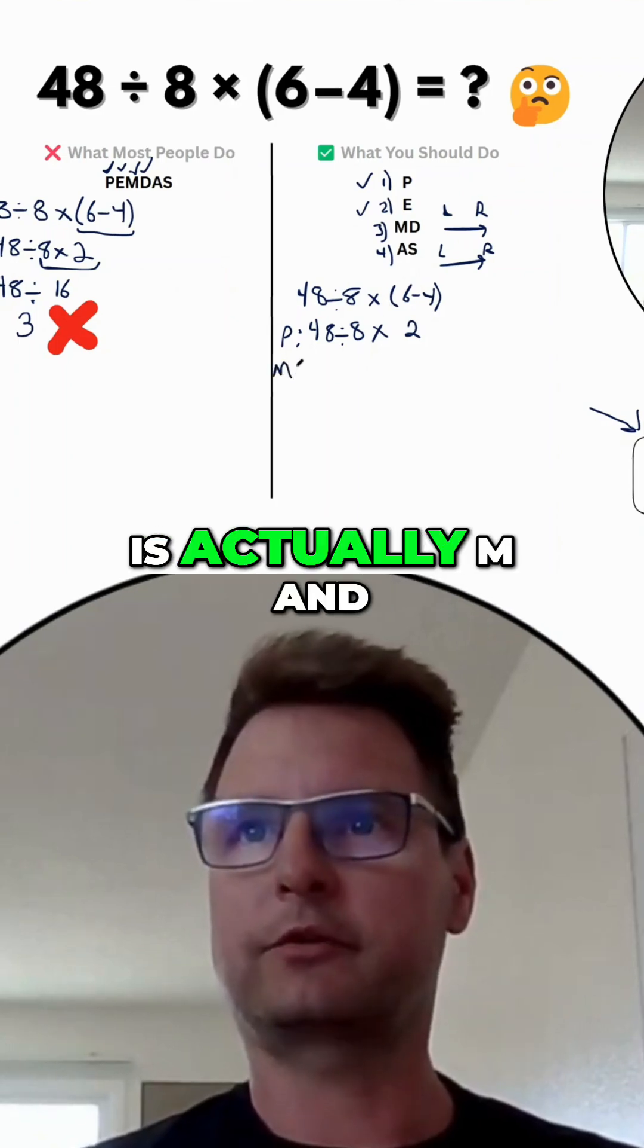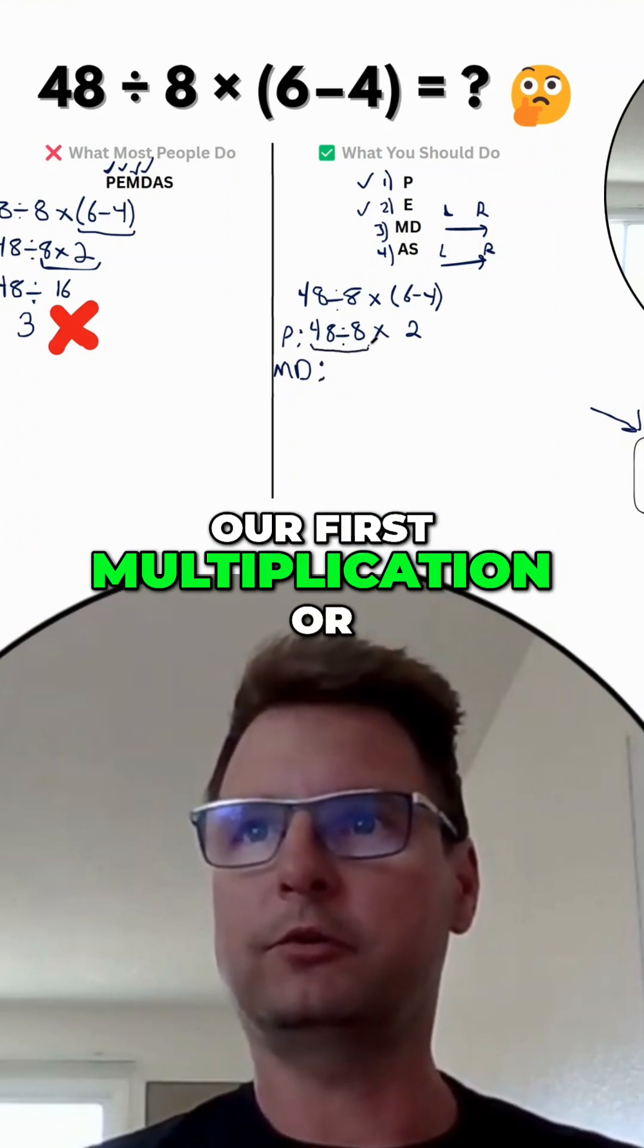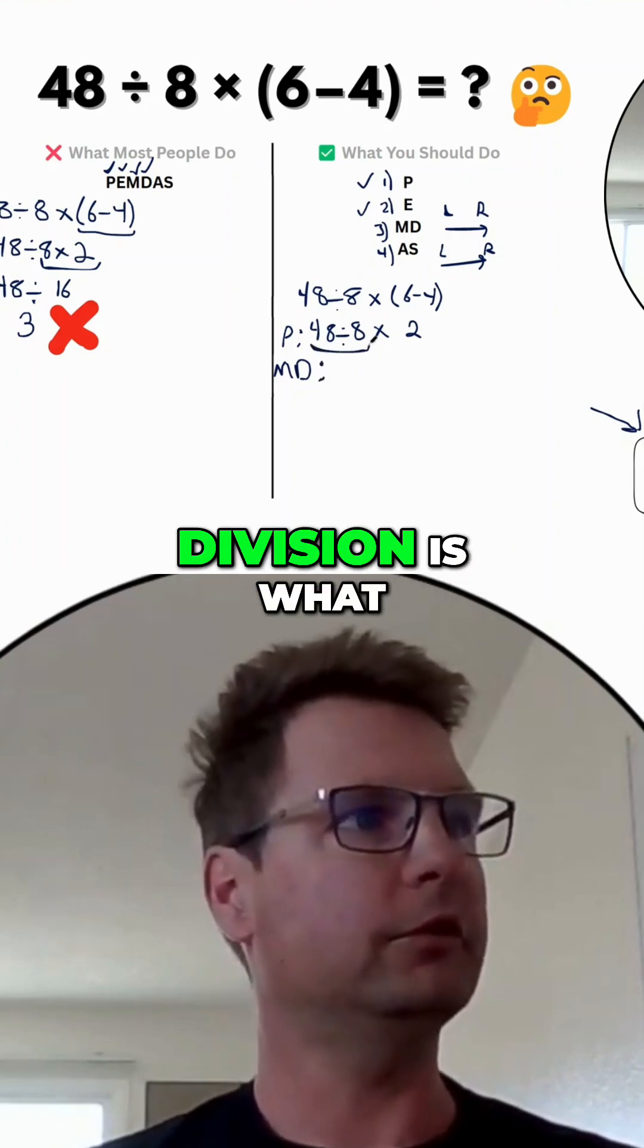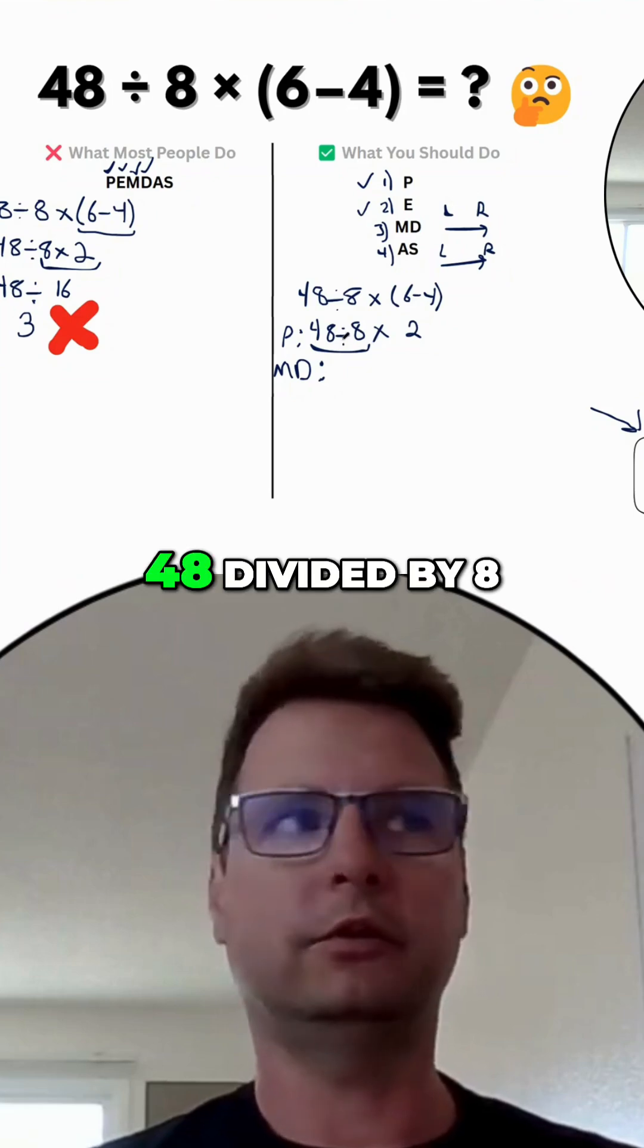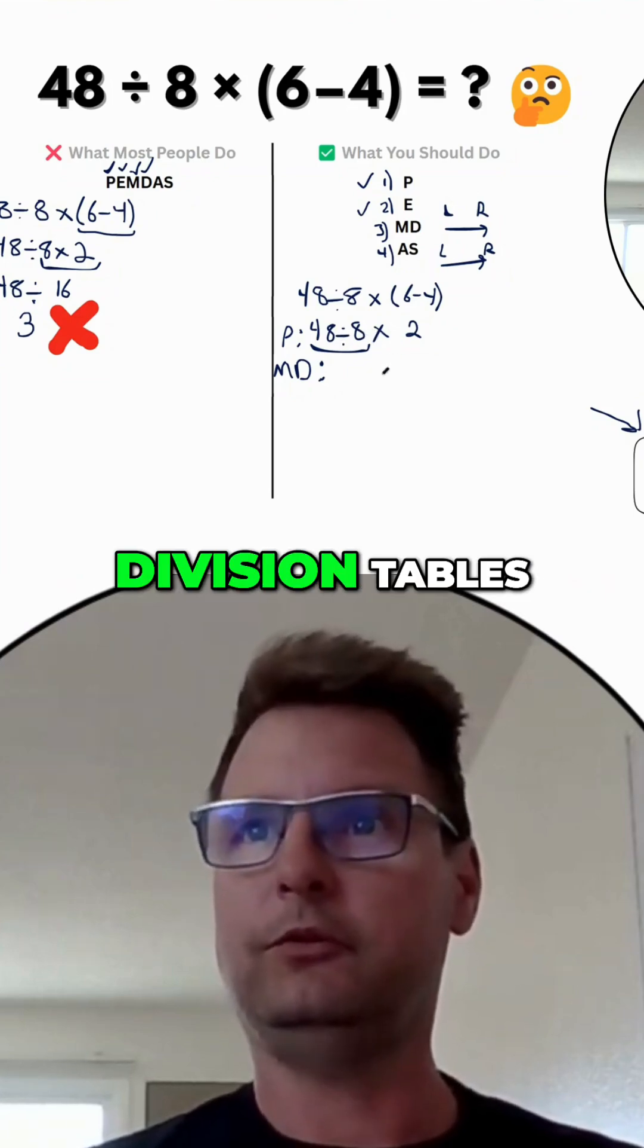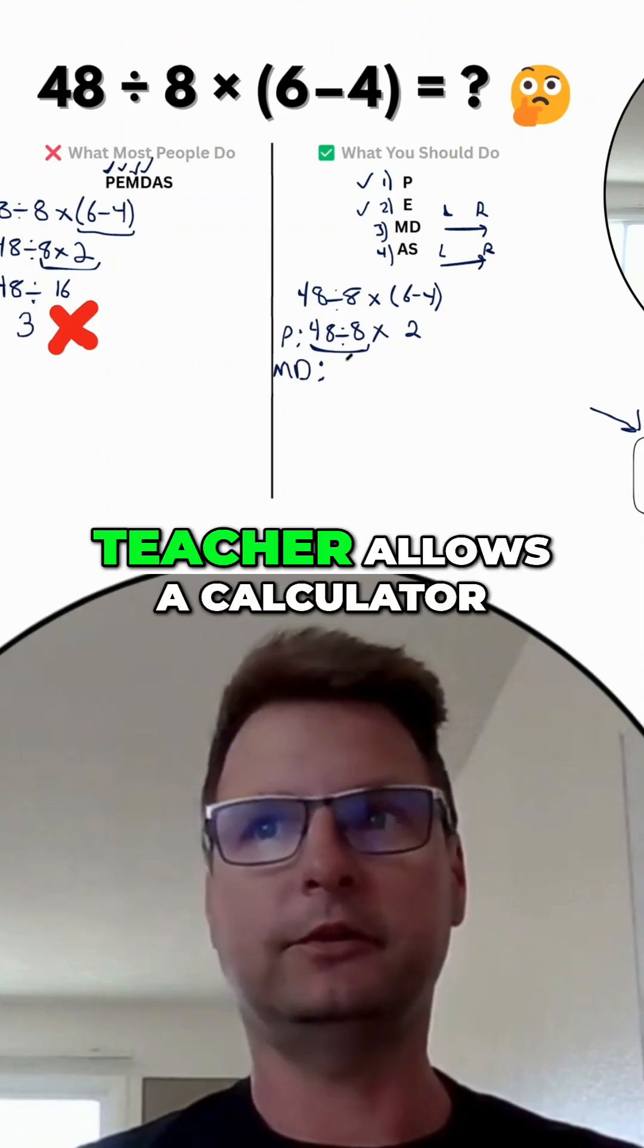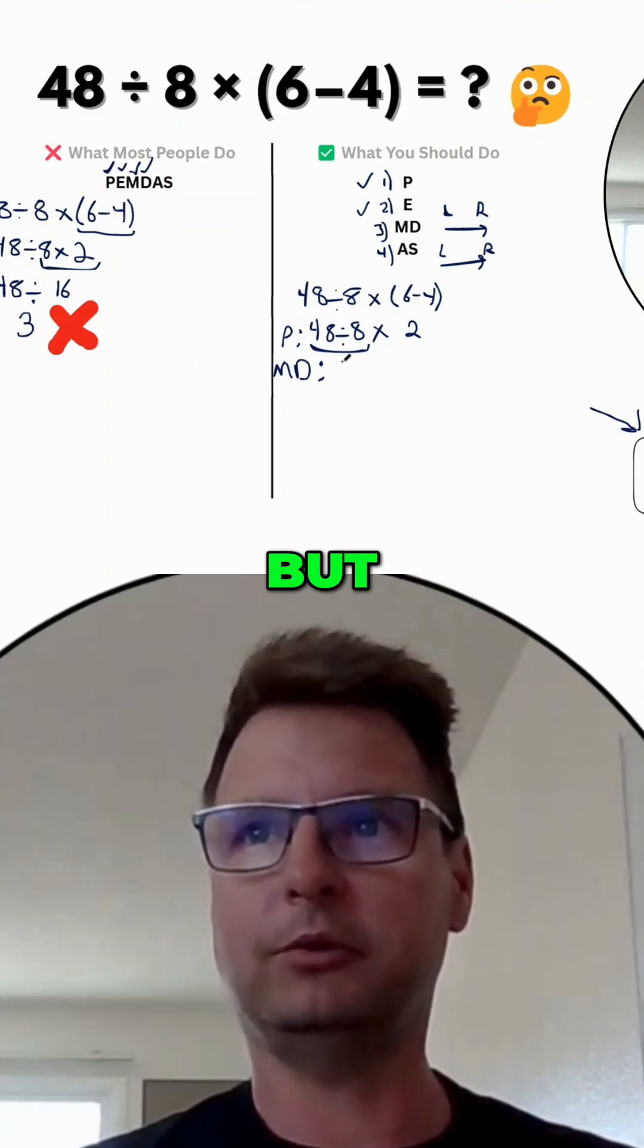So our next step is actually M and D, and then from left to right, our first multiplication or division is what? 48 divided by 8, which is times tables, division table, long division if you need to. I don't know if your teacher allows a calculator. So maybe that's okay, but this is six, right?